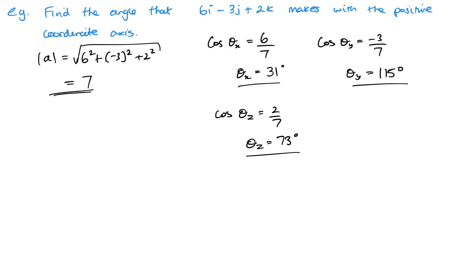Notice that the negative component gave us an obtuse angle. I won't do any more examples here — I'll give you a few to try, and I'll put the answers at the end as always. Generally it's quite straightforward.